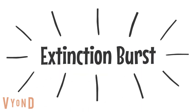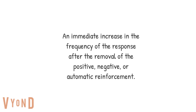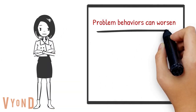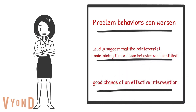Another extinction effect, and probably the most common, is the extinction burst. This is an immediate increase in the frequency of the behavior after the removal of positive, negative, or automatic reinforcement. Problem behaviors can worsen during extinction before they show improvement. Extinction bursts usually suggest that the reinforcers maintaining the problem behavior were successfully identified, indicating a good chance of an effective intervention.